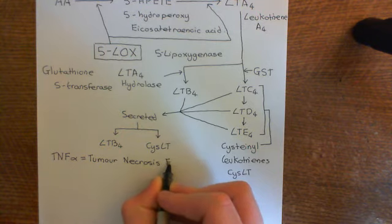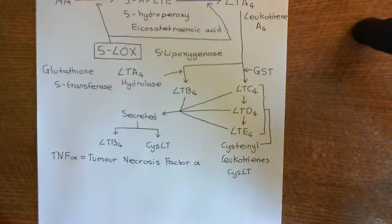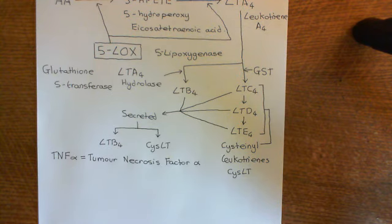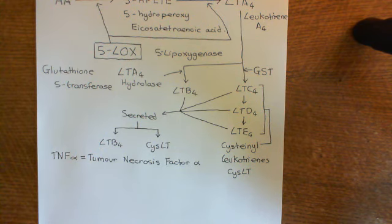Often you will hear people refer to tumor necrosis factor alpha just as tumor necrosis factor, because it's the most important one — there are other tumor necrosis factors such as TNF-beta and TNF-C, but TNF-alpha is the most important by far. So if people refer to TNF without clarifying which one, you can assume they mean TNF-alpha. We'll see what these four mast cell products are going to do and how they lead to asthma in the next video.